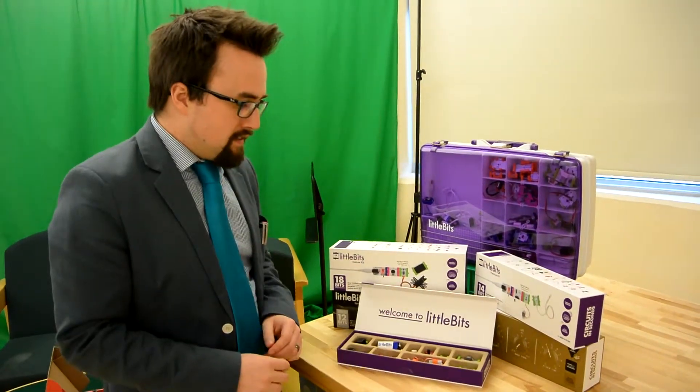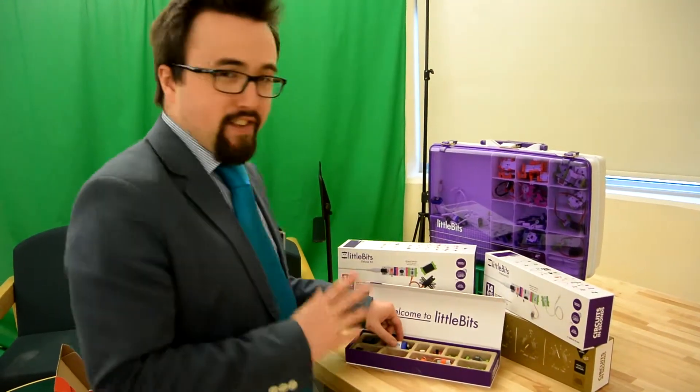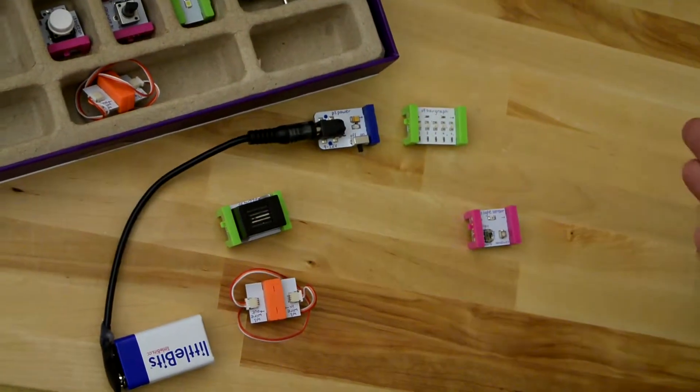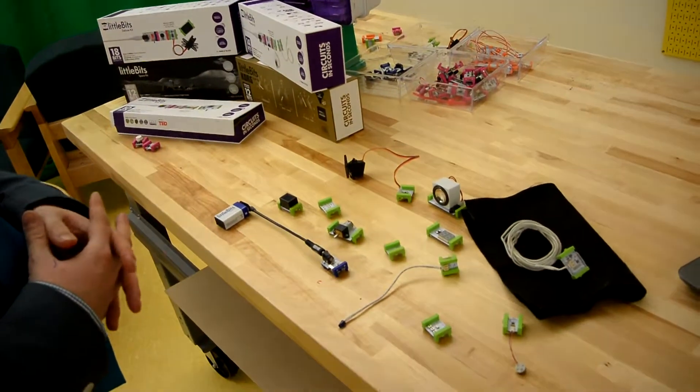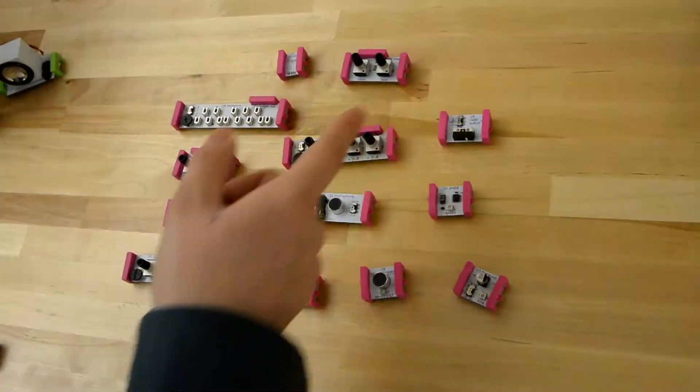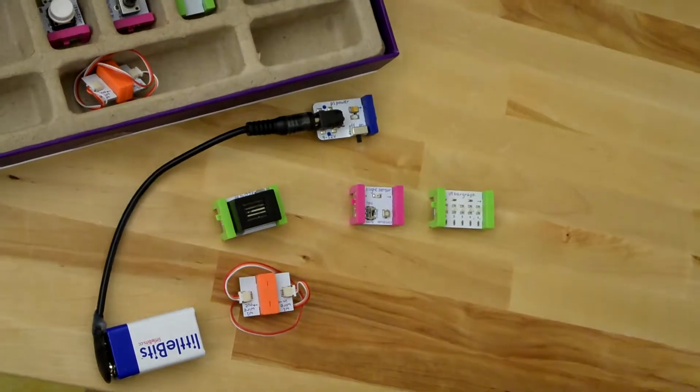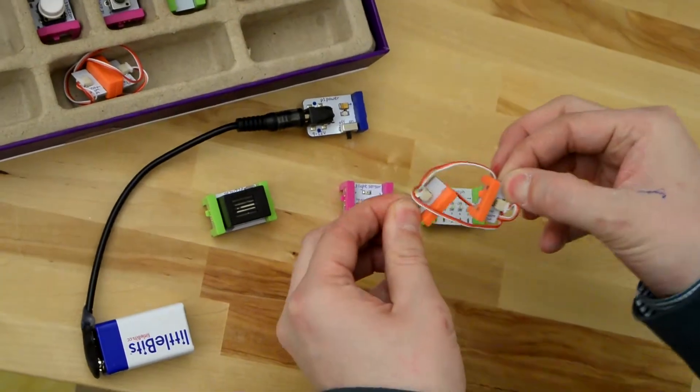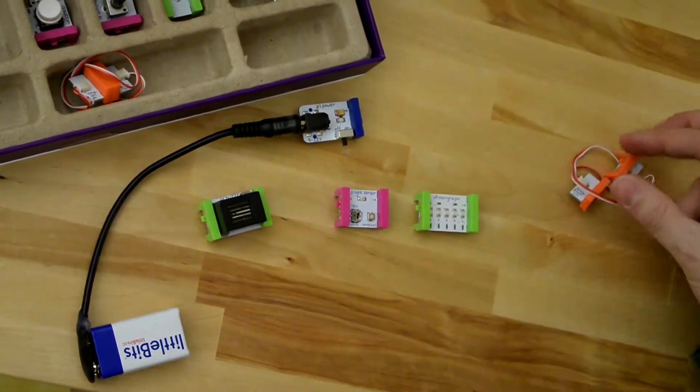So let's get into this idea of circuitry a little bit. As you can see, there are different colors with our littleBits. The green bits do something, the blue bits power something, the pink bits change the way that the green bits function, and the orange bits allow you to extend your circuit. Let me show you what I mean.